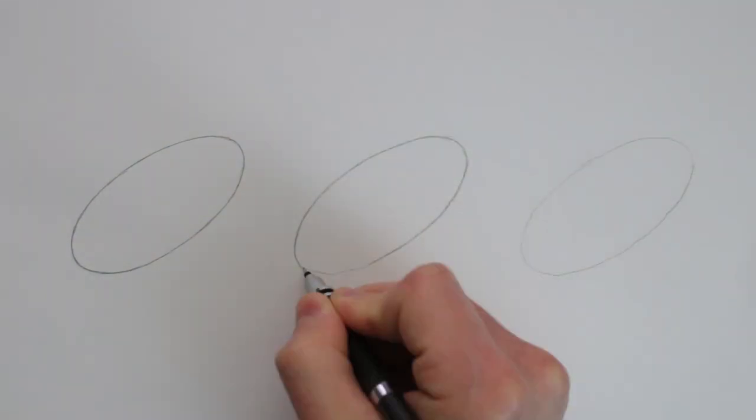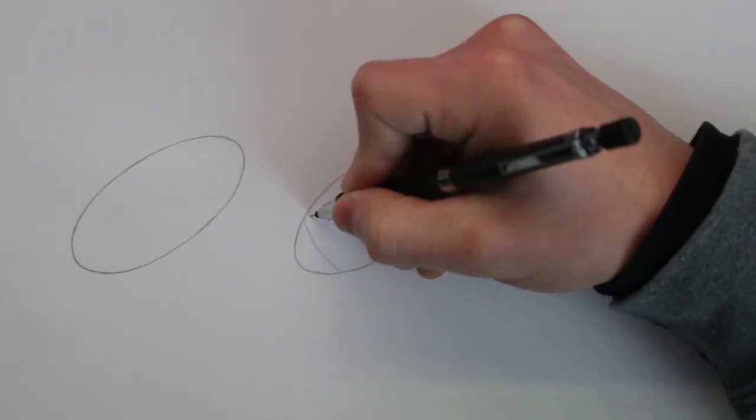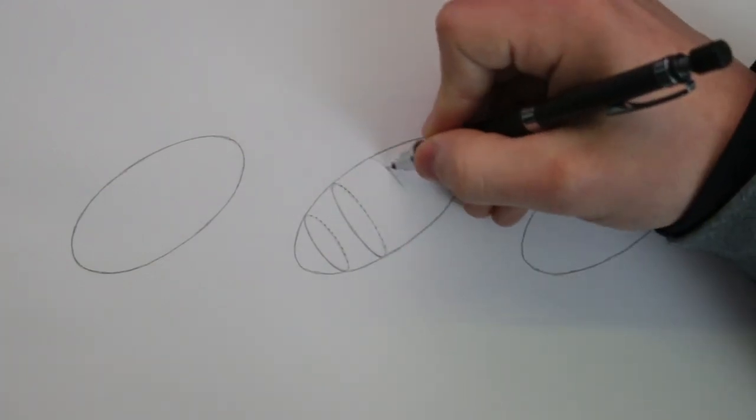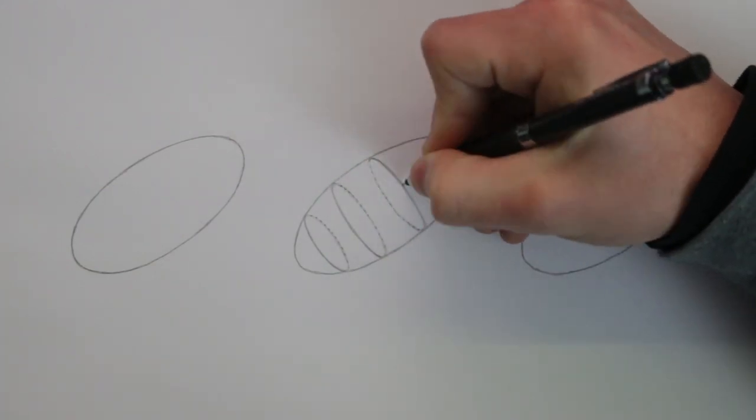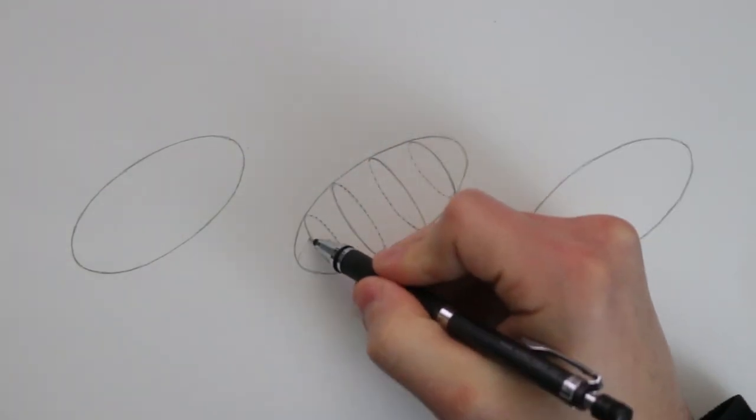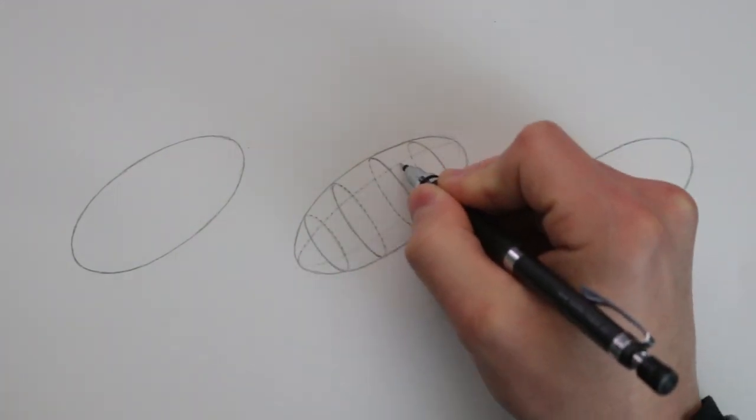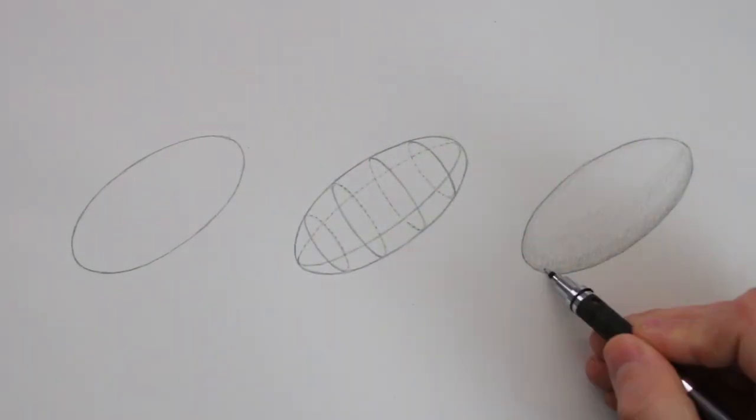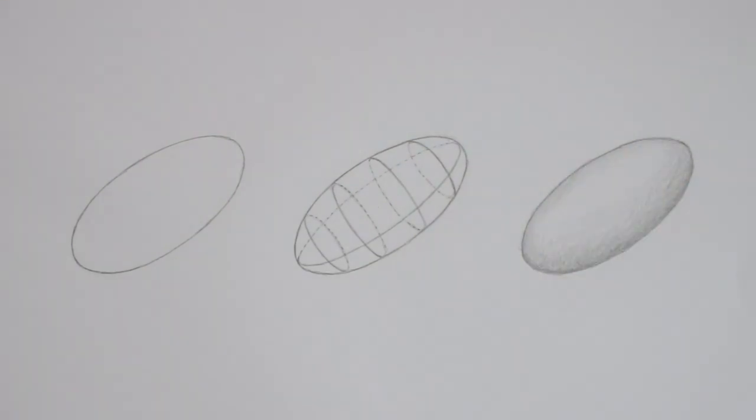Contour lines are lines which seem to wrap around an object, emphasising its form. In real life, there is the effect of light which represents form, but when drawing, there is no light, unless of course the artist recreates that effect themselves, but that's a different subject. Contour lines are used to represent form when drawing, and they can also indicate the position of an object in perspective.